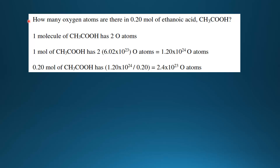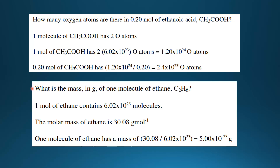Next example: how many oxygen atoms are there in 0.20 moles of ethanoic acid, CH3COOH? One molecule of ethanoic acid has 2 oxygen atoms. So 1 mole of ethanoic acid has 2 times Avogadro's number of oxygen atoms, which is 1.20 x 10²⁴ oxygen atoms. The question is asking for 0.20 moles, so we multiply 0.20 by 1.20 x 10²⁴, which gives us 2.4 x 10²³ oxygen atoms.